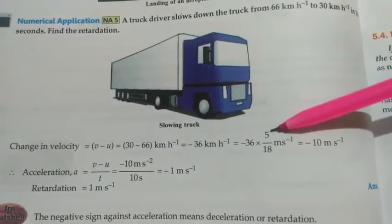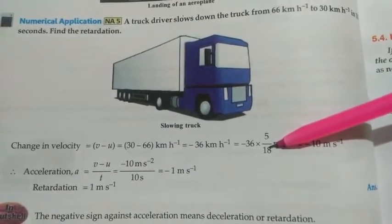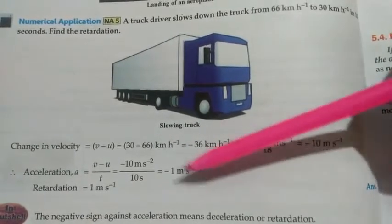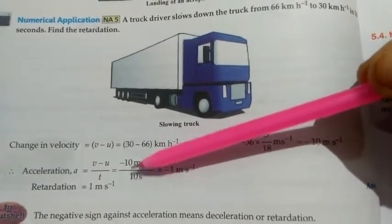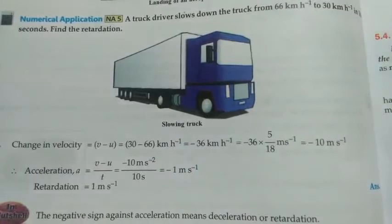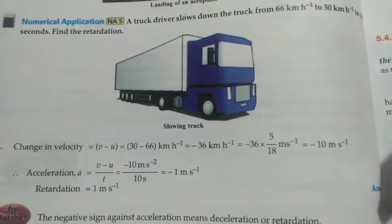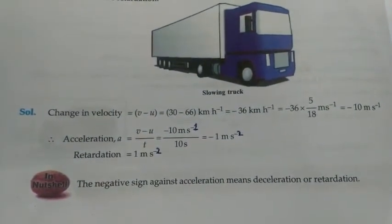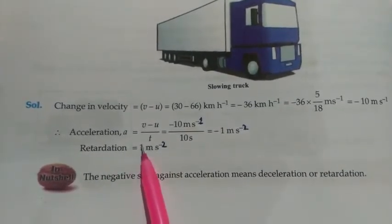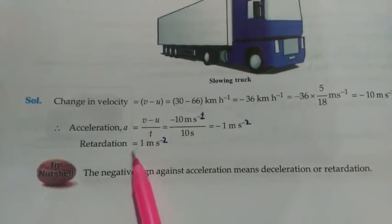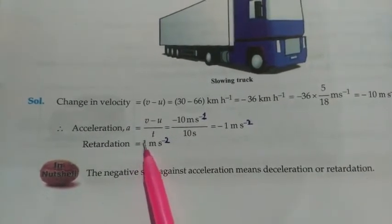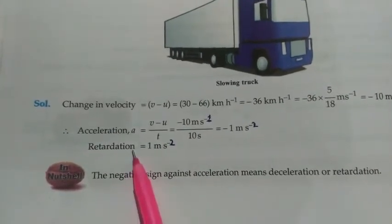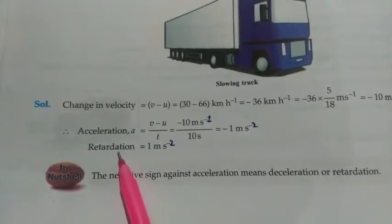Since the value is in km/h, we convert it to m/s by multiplying by 5/18, giving us −10 m/s. Dividing by time t = 10 s, we get a = −1 m/s². When writing retardation, we drop the negative sign — the negative sign indicates the acceleration is in the negative direction, but retardation is simply stated as 1 m/s².